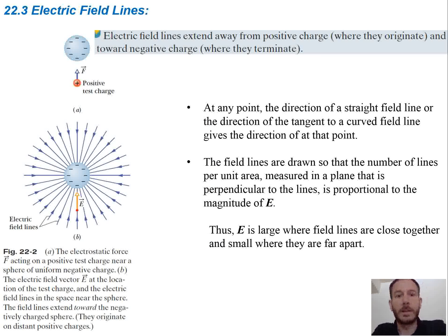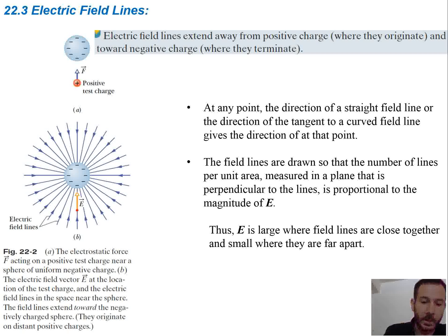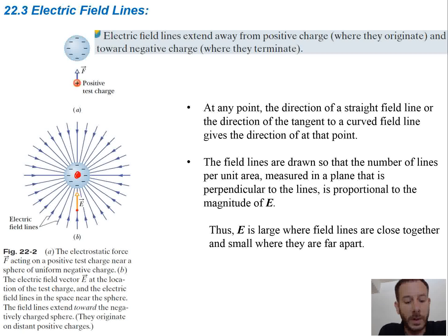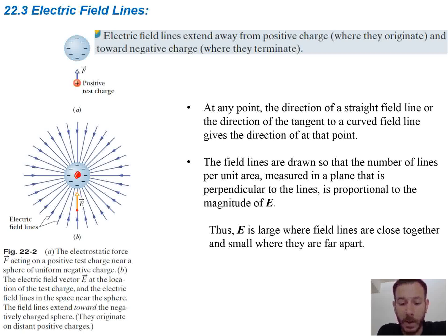Electric field lines extend away from positive charges, where they originate, and toward negative charges, where they terminate. So if you have a sphere of negative charge, your electric field lines are going to be towards it. At any point, the direction of a straight line, or the direction of a tangent to a curved field line, gives the direction at that point.